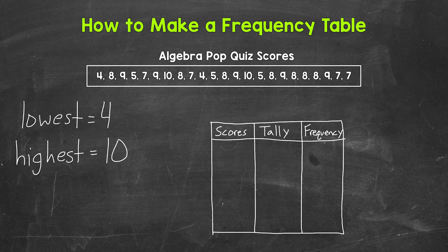So when we make frequency tables, we need three columns. The first column is going to be for the values we are using for the data that we are working with. Here, we have values to show the scores on a pop quiz. The middle column is for the tallies. And then the third column, the one on the right, is the frequency column.